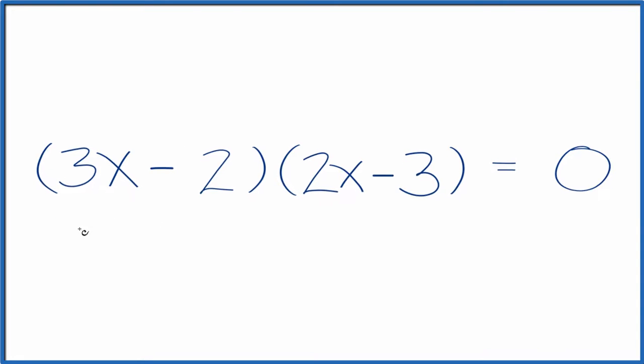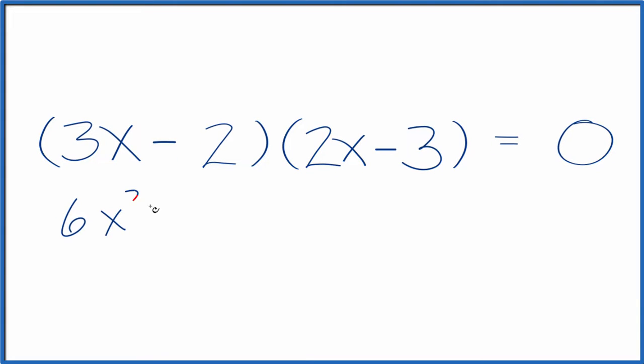3x times 2x is 6x squared. Then we have 3x multiplied by negative 3. That's negative 9x. Negative 2 times 2x is negative 4x.